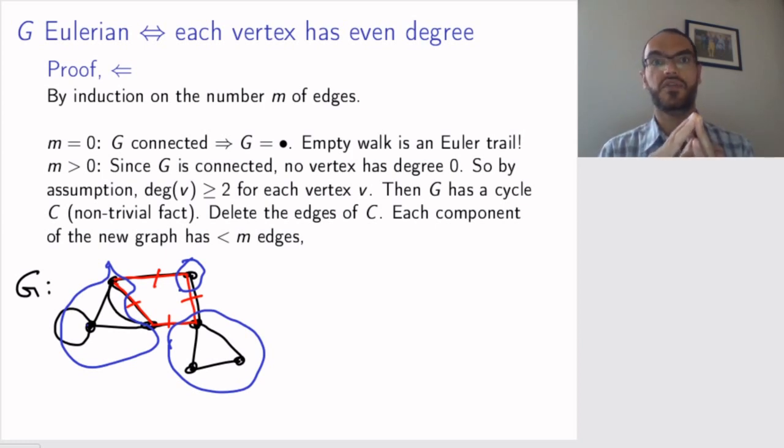Since the number of edges is smaller than m, I can use my induction hypothesis where I'm assuming that graphs with smaller numbers of edges that are connected with even degrees have Eulerian trails. So, by induction, I'm assuming that each of these small components is Eulerian.